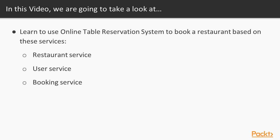The idea is to make them independent, including having their own separate databases. We can summarize the functionality of each of these three microservices. The restaurant service provides functionality for the restaurant resource where CRUD operations can be performed. You can search based on criteria, and it provides the association between restaurants and tables.